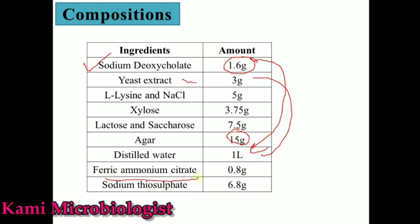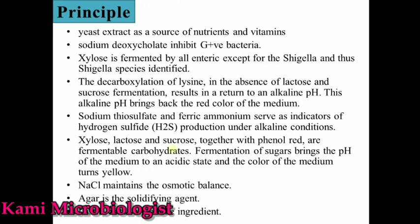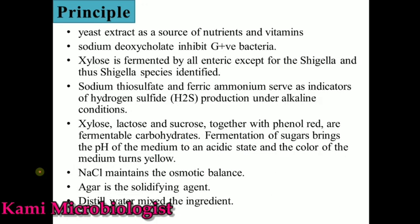Ferric ammonium citrate 0.8 gram per liter, sodium thiosulfate 6.8 gram per liter, and obviously we need distilled water to mix all these ingredients. Now let's talk about the principle of this media — the function of each ingredient present in this medium.